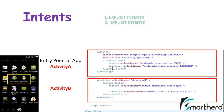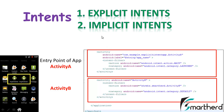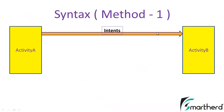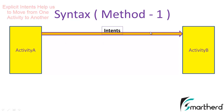In the previous tutorial I discussed that intents are of two types: explicit intents and implicit intents. In the last tutorial I showed you that in order to move from one activity to another we use intents. Now what is the syntax of writing intents so that we can migrate from one activity to the other? This intent is actually the explicit intent that we are using here.